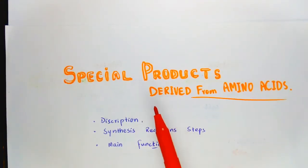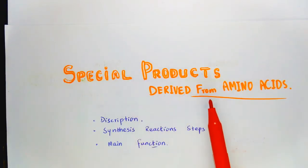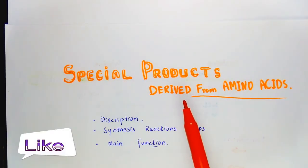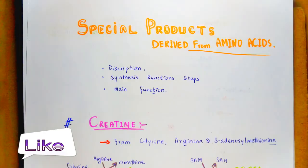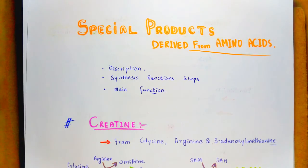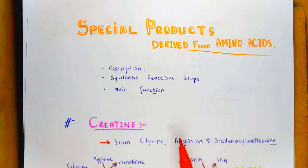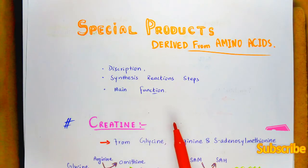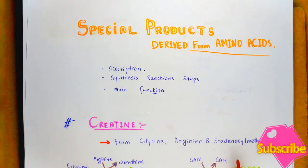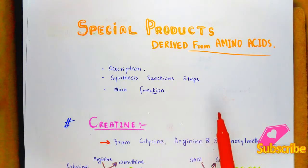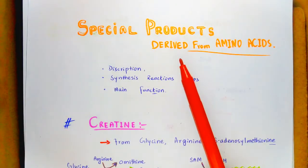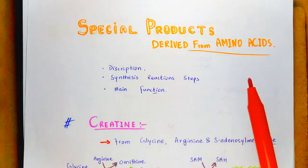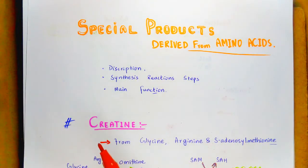Let's try to understand the biochemistry of the special products which are derived from amino acids. Many compounds are derived from amino acids by specific reactions, but in this video I will only talk about creatine, glutathione, and nitric oxide, which are the special products formed from amino acids.